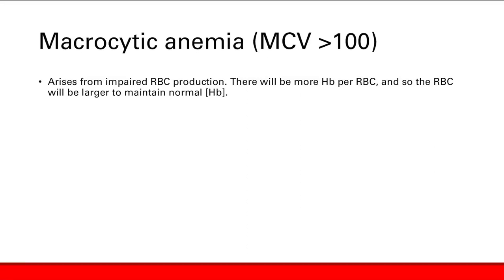We've finished talking about microcytic anemias where the red blood cells are small, normocytic anemias where red blood cells' size are normal, and macrocytic anemias where the MCV is over 100. Macrocytic anemia arises from impaired red blood cell production — you're not making enough red blood cells, you have less red blood cells with the same amount of hemoglobin, so too much hemoglobin per red blood cell. The red blood cell maintains normal hemoglobin concentration by being larger than normal, dividing less, so it ends up larger. That's why you get a macrocytic anemia.